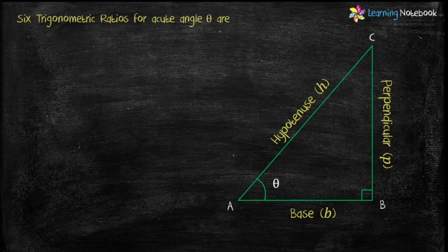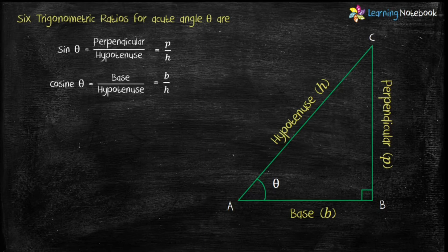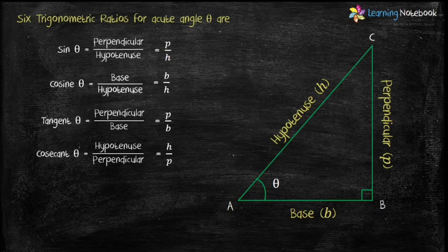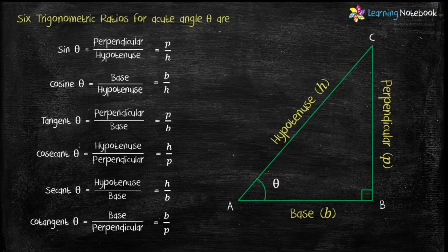Six trigonometric ratios for acute angle theta can be defined as follows. Sine theta equals perpendicular upon hypotenuse. Cosine theta, also called cos theta, equals base upon hypotenuse. Tangent theta or tan theta equals perpendicular upon base. Cosecant theta or cosec theta equals hypotenuse upon perpendicular. Secant theta or sec theta equals hypotenuse upon base. And cotangent theta or cot theta equals base upon perpendicular.